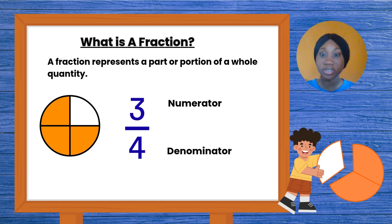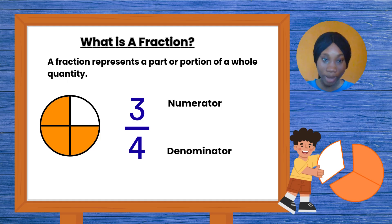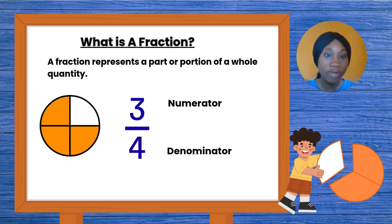For example over here, I have this circle, and I divide that circle into four parts. Then I go ahead and shade three out of the four parts. What is my fraction? It means three out of four parts has been shaded. So I have three over four.